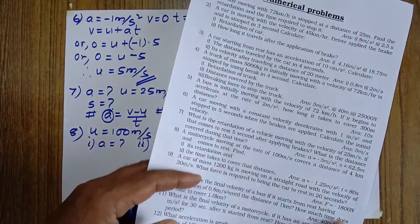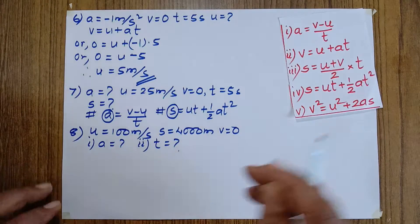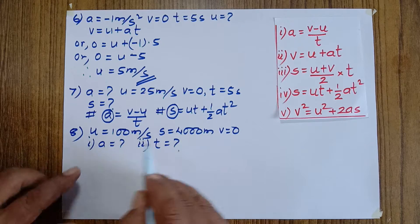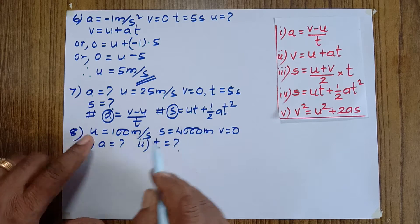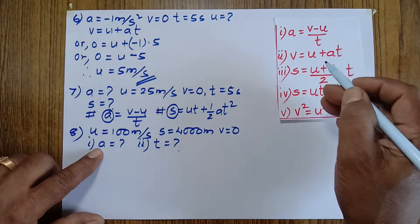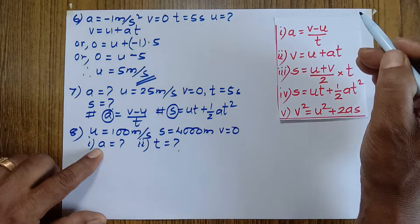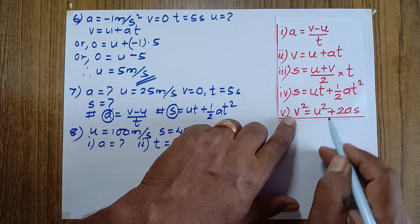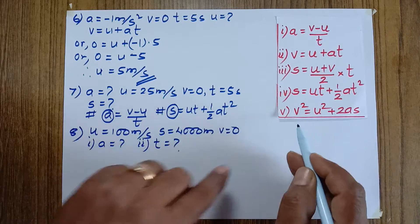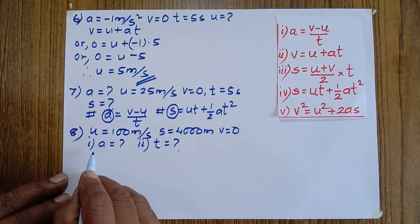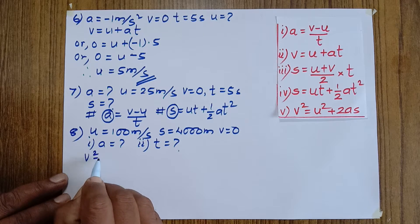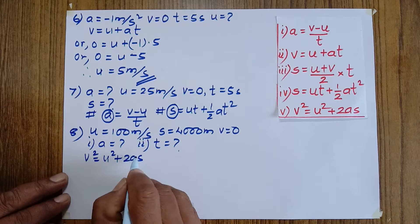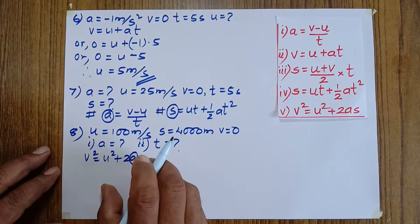In mathematical form: u, s, and v are given; a is the unknown. We search among the five equations for one containing u, s, v, and a. The first and second equations don't contain s. The fifth equation, v² = u² + 2as, contains all four symbols, so we use it to calculate a.